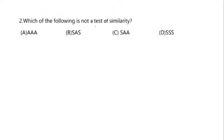Which of the following is not a test of similarity? In similarity, we have three tests: AAA test which includes only angles; SAS — two sides and the included angle; and SSS — all three sides. However, SAA is not a valid similarity test, so SAA is the correct answer. It is not a test of similarity.